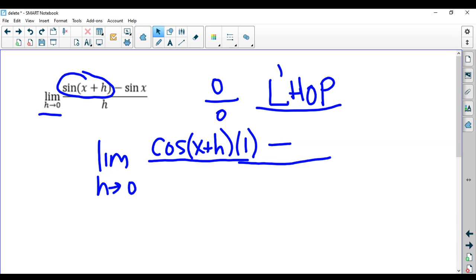And then on the second part of this, sine of x. Sine of x is a constant in this case. So its derivative is zero. And now you take the derivative of h on the bottom, that's going to be one.